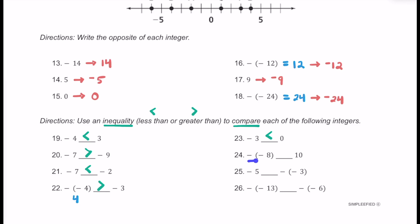For number 23, we have negative 3 and 0. All negative numbers are going to be less than 0, so negative 3 is less than 0. For number 24, we have negative negative 8, which — just like in 22 — is just going to be positive 8. A regular 8 is going to be smaller than a regular 10, so it's less than 10. For number 25, we have negative 5 and negative negative 3 — which is really just 3. So we have a negative number and a positive number, and negative 5 is less than negative negative 3.